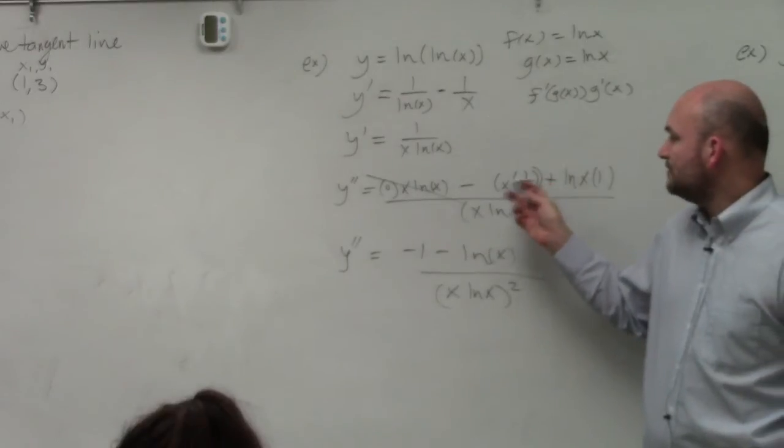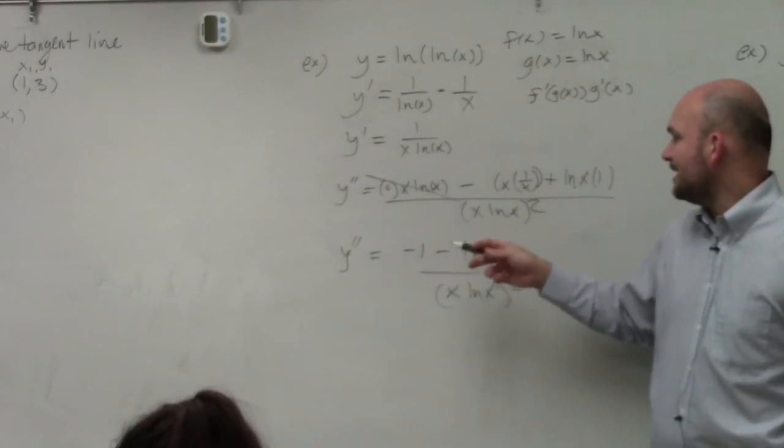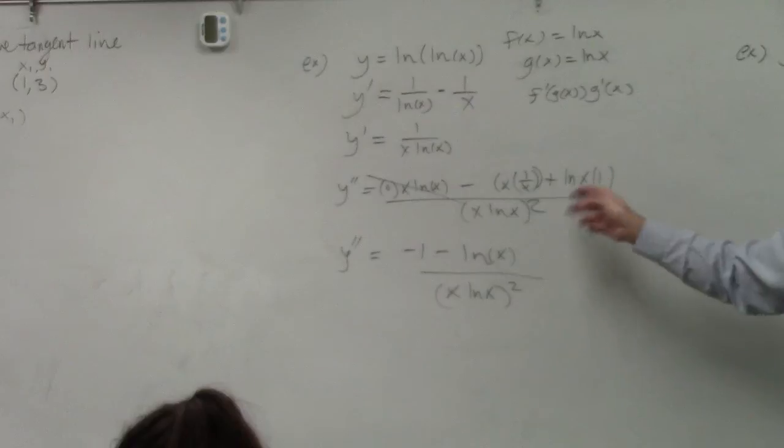So the numerator becomes negative 1 minus ln of x, and then you basically have x ln of x squared.